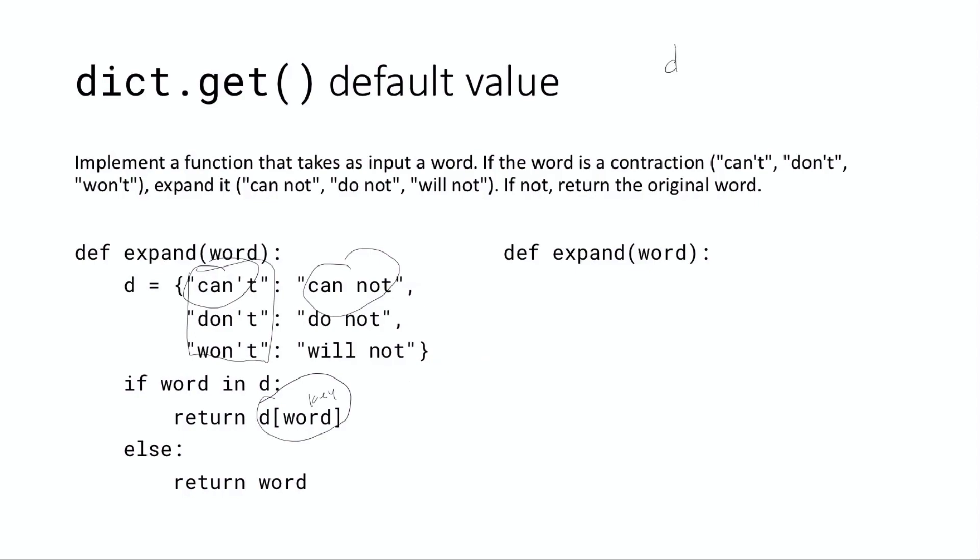But I'm going to write up here, you can basically do d.get, you can do word, and then you can specify some sort of a default. So you can say default equals something, I'm going to write x there, but it's whatever you want.